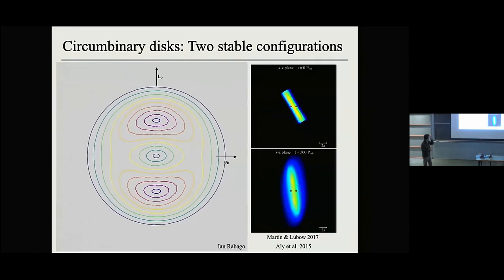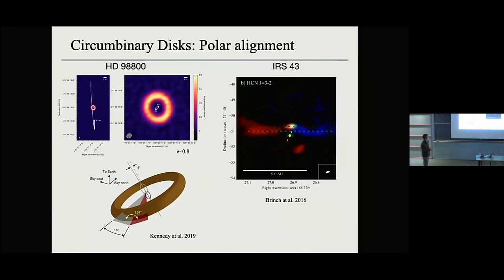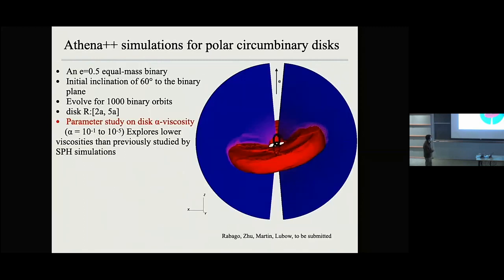SPH simulations have been carried out to show that for highly misaligned circumbinary disks around a central binary, they can go to the polar direction. We know this from observations, but all these observations probe disks with very low viscosity. We want to see whether this happens if you have a low-viscosity disk. In our simulation we have an equal-mass binary with eccentricity 0.5, inclined 60 degrees toward the binary plane. We rotate the whole system by 90 degrees so the binary moves up and down, with the eccentricity vector pointing upward, so the polar disk will still be kept in the simulation domain.